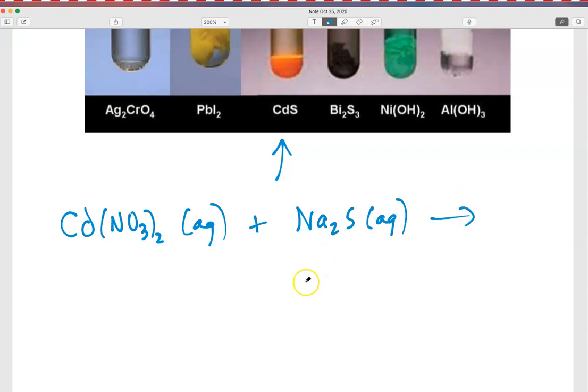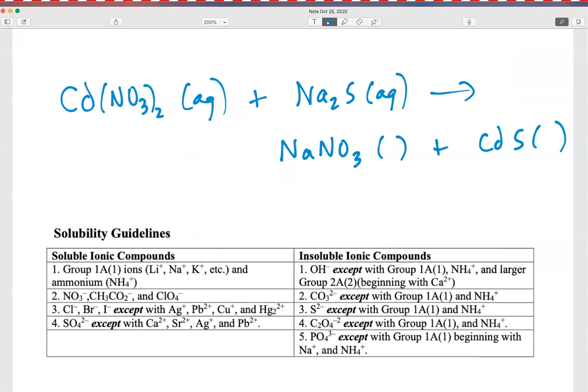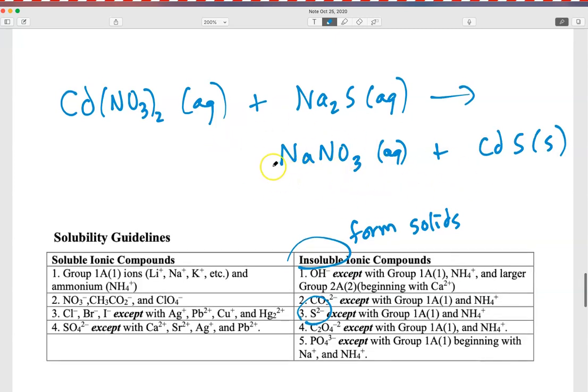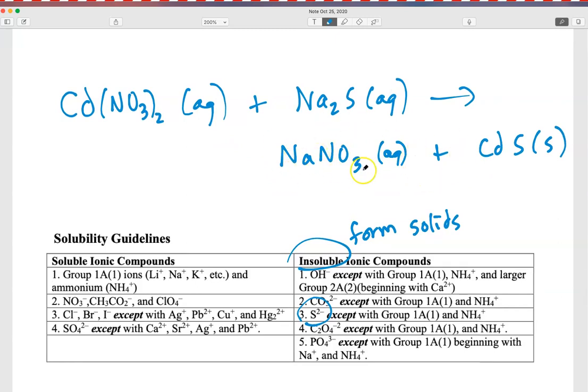So remembering that those two exist as the free ions moving around in solution, potential products would be sodium nitrate and the cadmium sulfide. And how do we know that cadmium sulfide is insoluble? Well, we have the picture here, but let's look at our solubility guidelines again. And here's our solubility guidelines from our equation sheet. And if we look at the insoluble ionic compounds, this is the ones that form solids. We can see that sulfides, except for Group 1A and ammonium, are insoluble ionic compounds. So we verify that the cadmium sulfide is the solid product and the sodium nitrate again remains in solution.